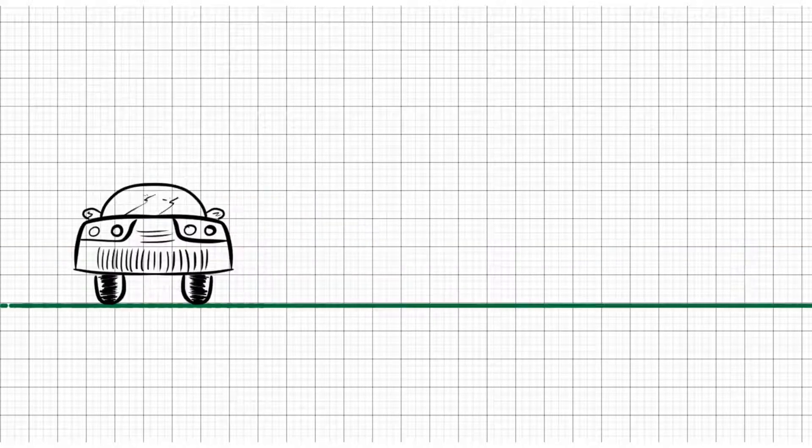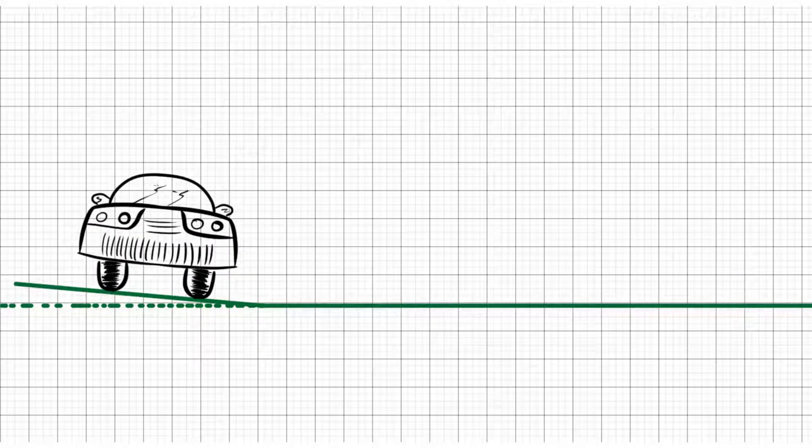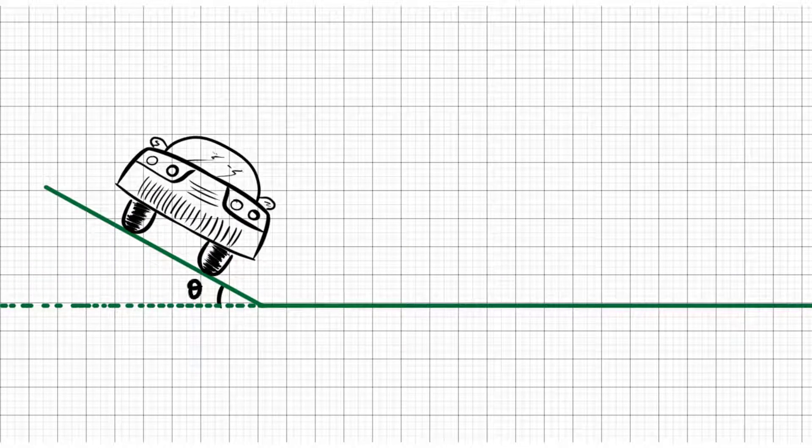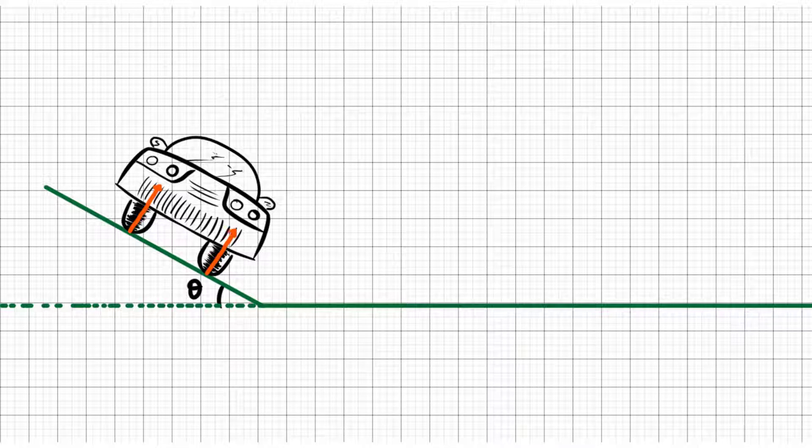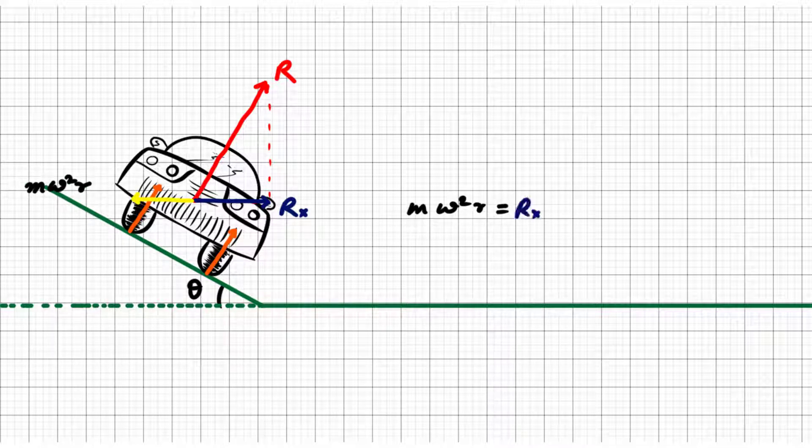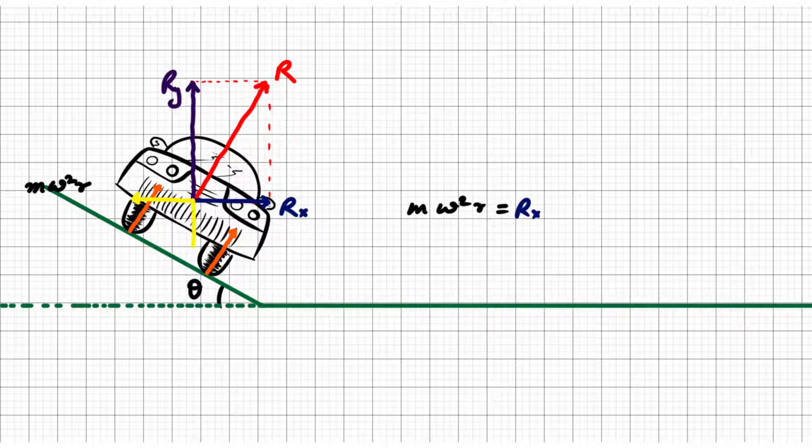This situation can be avoided by slowing down the car or by banking the roads to a certain angle. This is so that the horizontal component of the normal reaction by the track can provide for the centripetal force, which from car's reference frame is counteracting the centrifugal force. And the other component of the normal reaction, which is vertical component, is counteracting the weight.